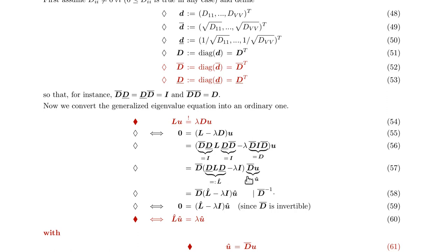Then we can move D bar outside of the equation left and right, so we have this one. If we now define our matrix L hat and our vector u hat in this way, we get this equation. Then we can multiply with D bar inverse and get an ordinary eigenvalue equation. We have to assume that D bar is invertible for that.